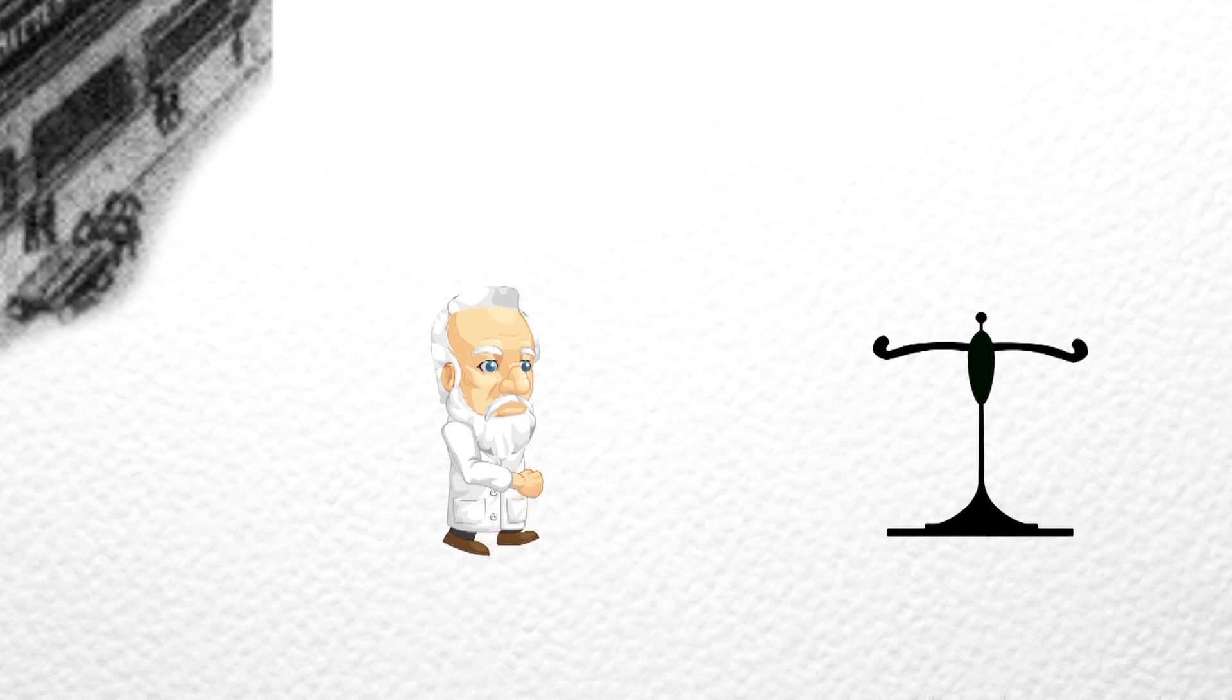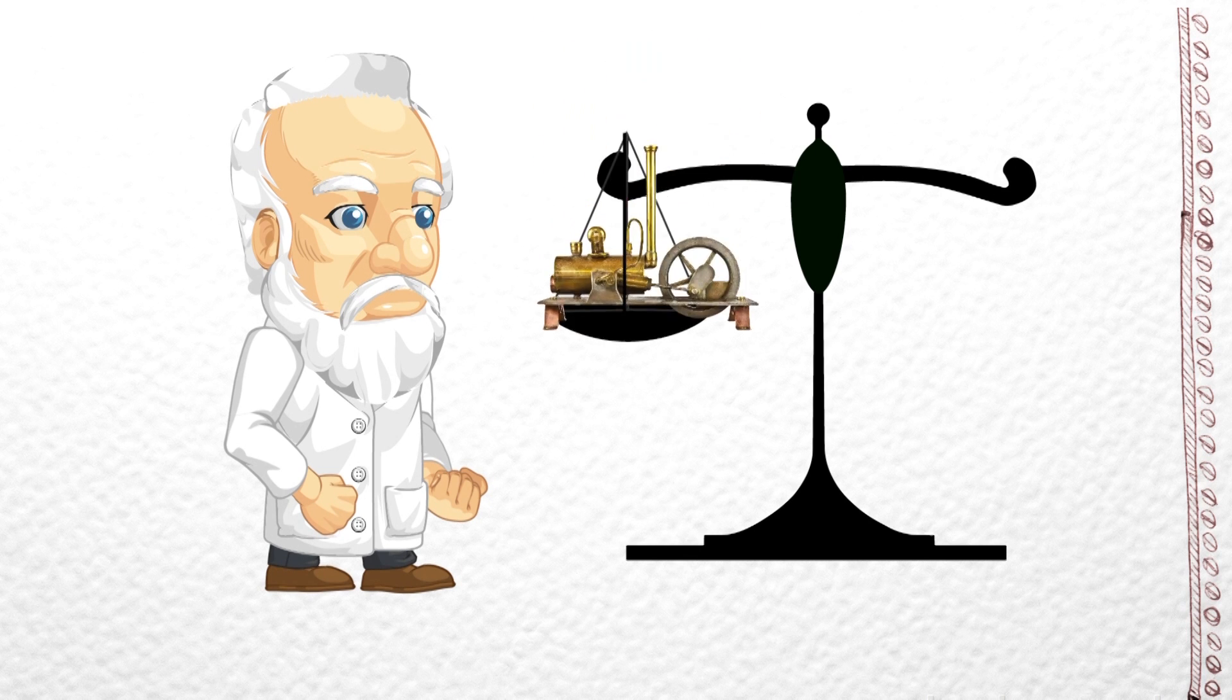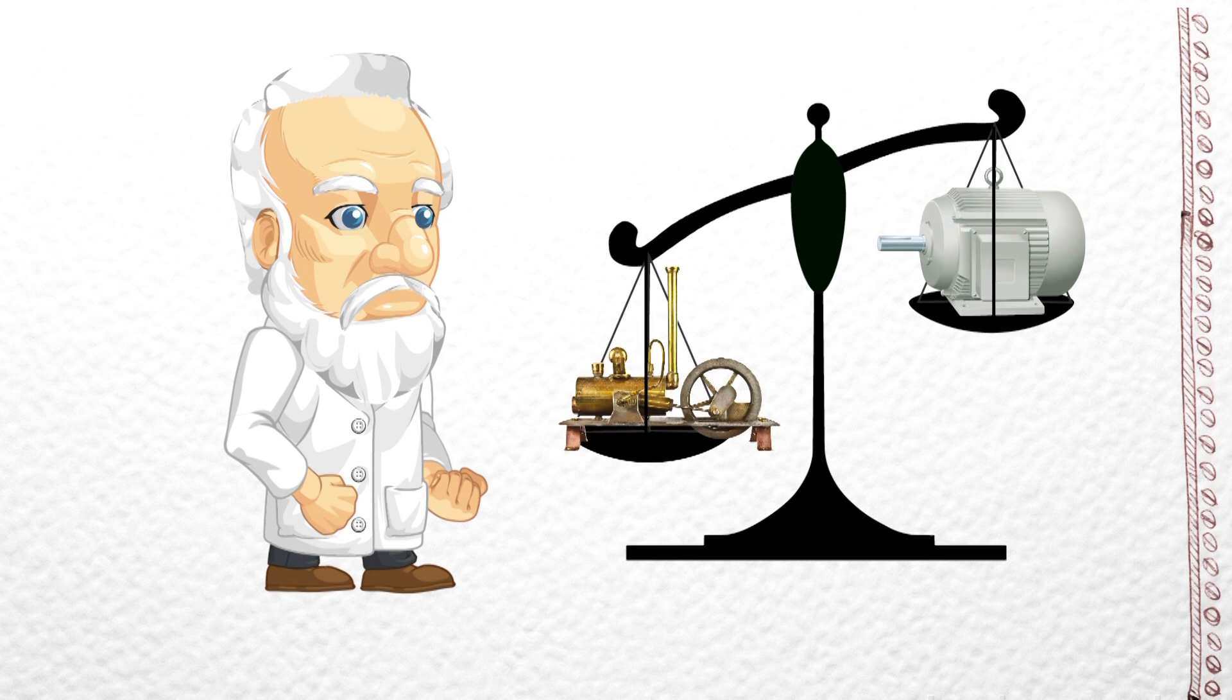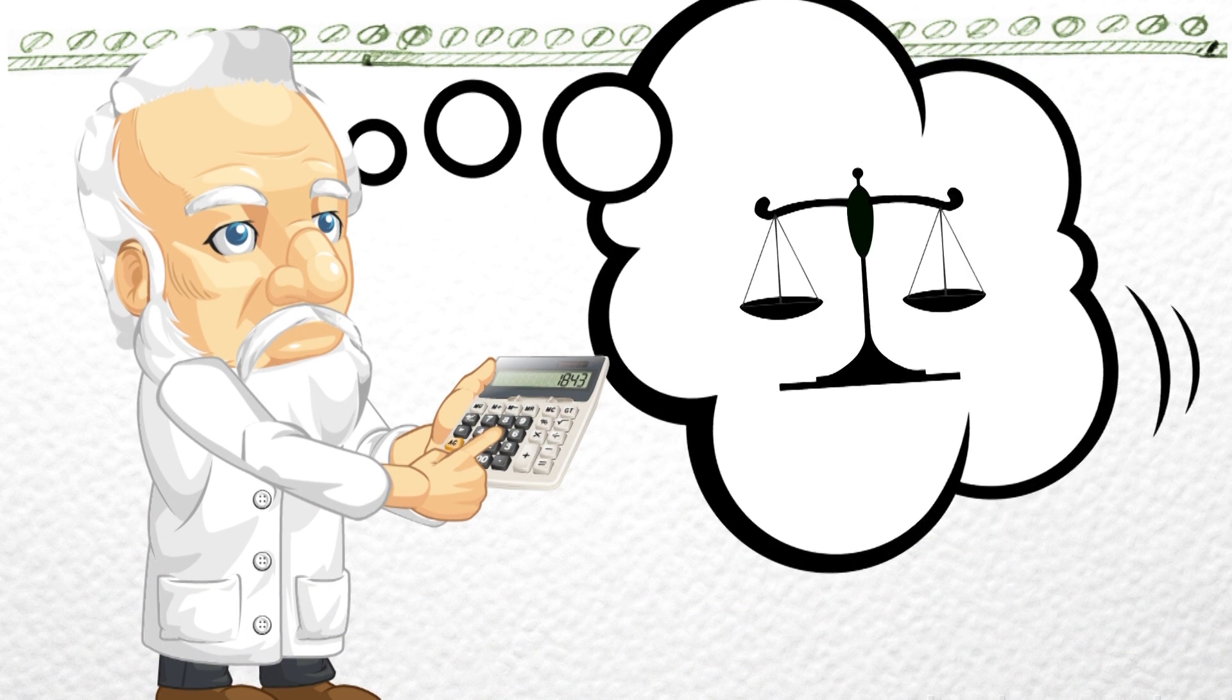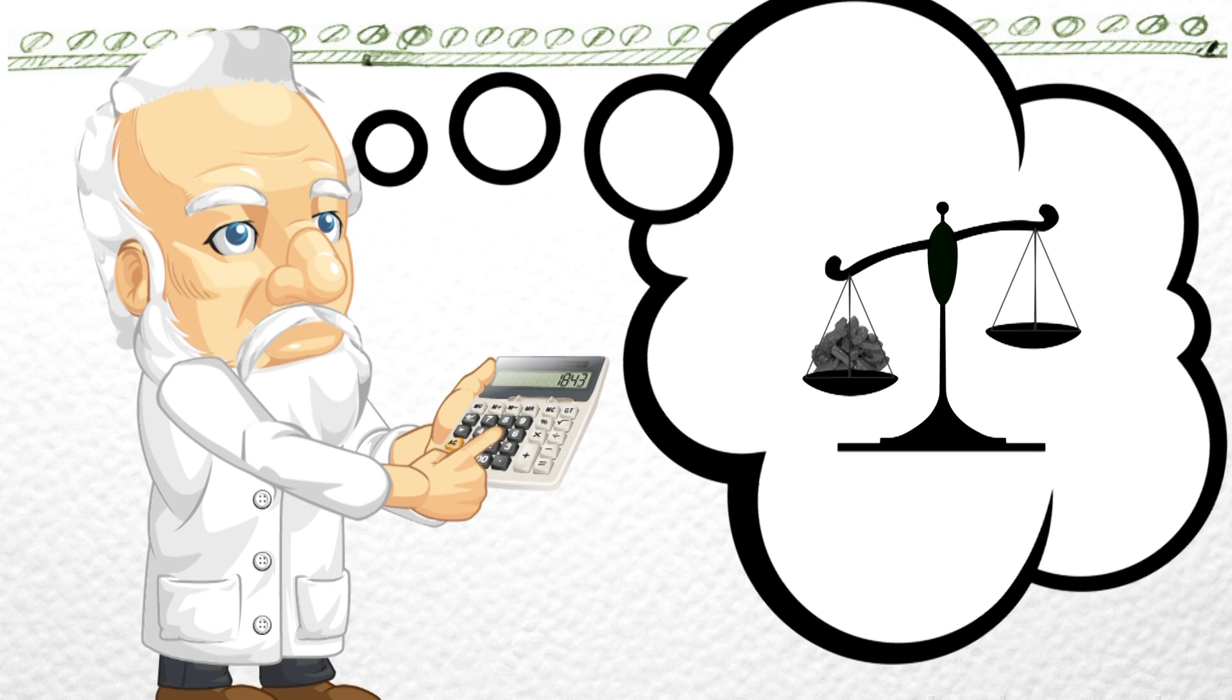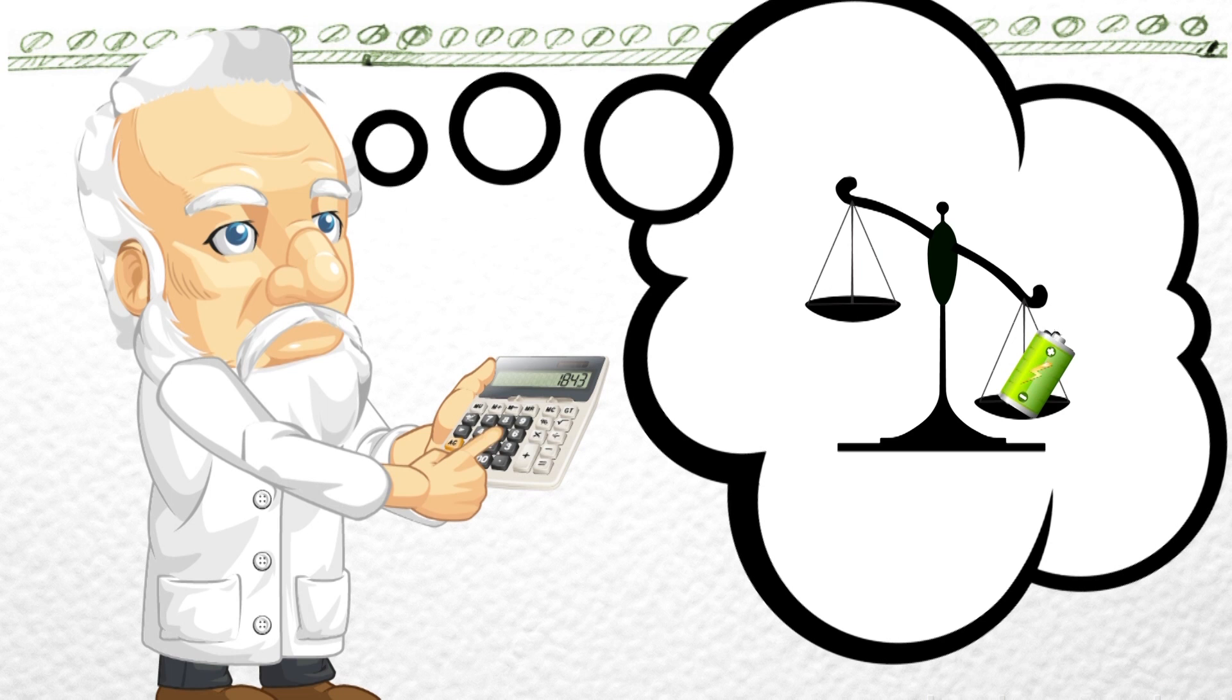Sometime around 1840, he started to look into replacing the old steam engines with the newly invented electric motor. Motivated by trying to cut down on his costs, Joule realized that it was cheaper to burn coal in a steam engine than burn zinc in an electric battery.